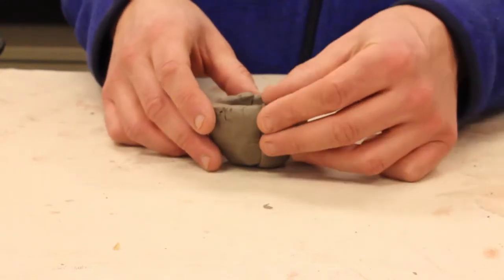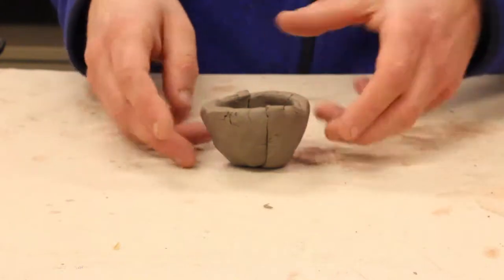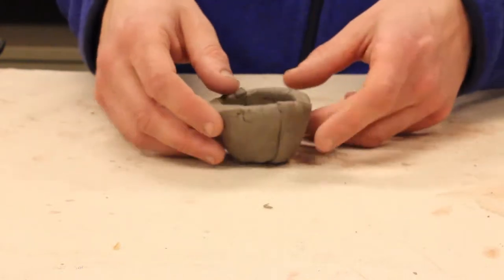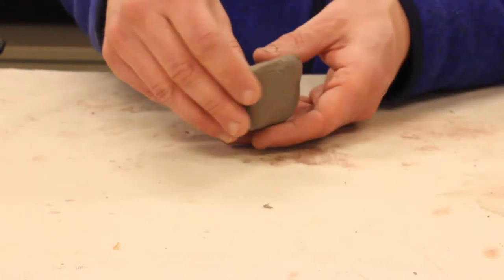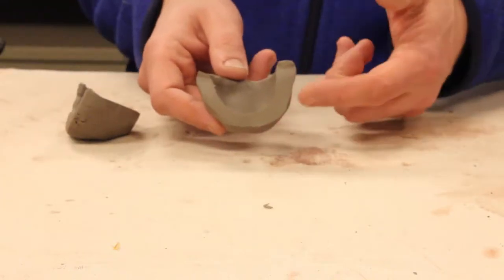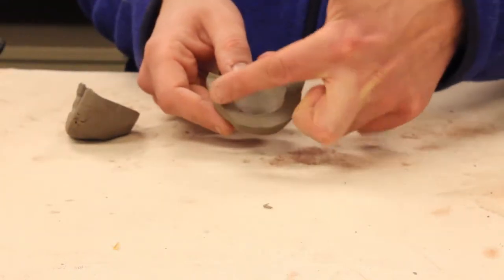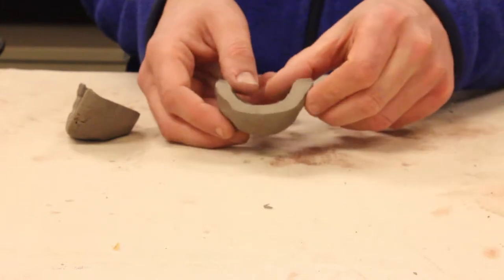Now a pinch pot can be long and thin or can be perfectly round like this. But the basic thing you want to make sure of is that it's all even along the inside. The walls of your pinch pot should be completely even.